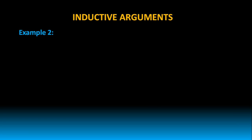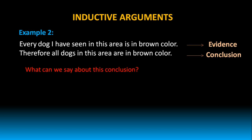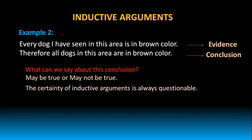Let's take one more example. Every dog I have seen in this area is brown in color. Therefore, all dogs in this area are brown in color. If we analyze this set of statements, we can observe that they are moving from evidences to a conclusion. But what can we say about the conclusion of this argument? It may be true or it may not be true. The certainty of inductive arguments is always questionable.